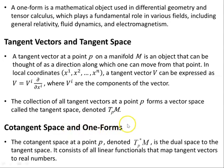The cotangent space at a point p, denoted T*_p M, is the dual space to the tangent space. It consists of all linear functionals that map tangent vectors to real numbers.